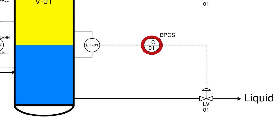Based on the signal received, LC-1 will send the signal to the level control valve, LV-1, to open or close as needed.